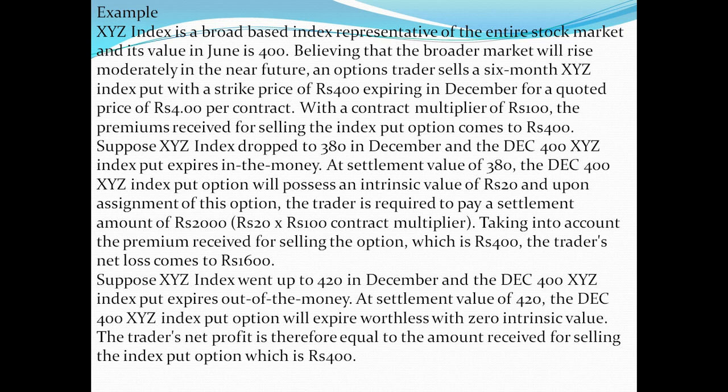Suppose XYZ index drops to 380 in December. The December XYZ 400 index put expires in the money at the settlement value of 380. The December 400 XYZ index put option will possess an intrinsic value of ₹20, and upon assignment, the trader is required to pay a settlement amount of ₹2,000 (20 multiplied by 100 contract multiplier). Taking into account the premium received of ₹400, the trader's net loss comes to ₹1,600.